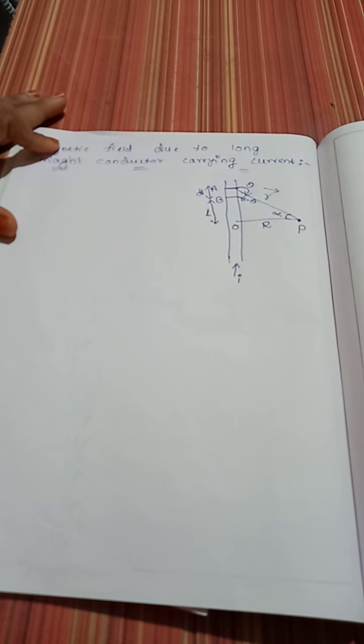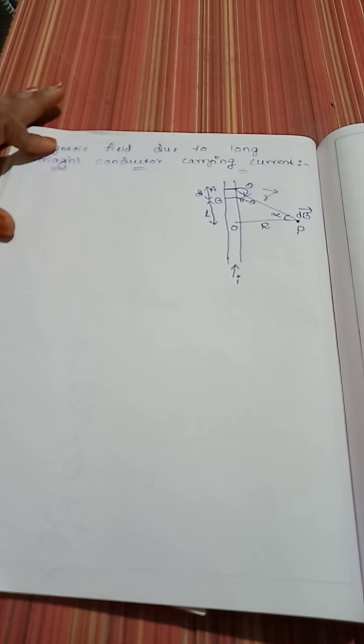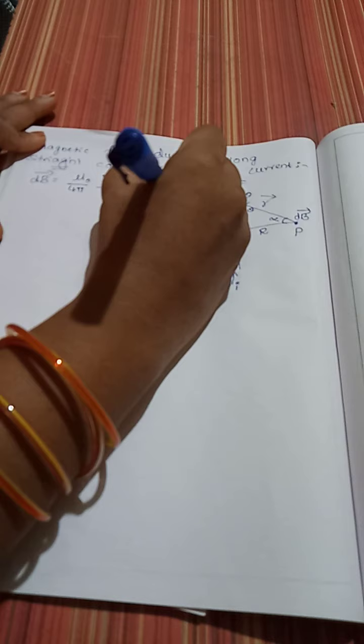From Biot-Savart Law, let dB be the magnetic field produced due to the current I flowing in element AB of length DL. From Biot-Savart Law, we have: dB is equal to mu naught by 4 pi, times I DL sin theta, divided by r squared.